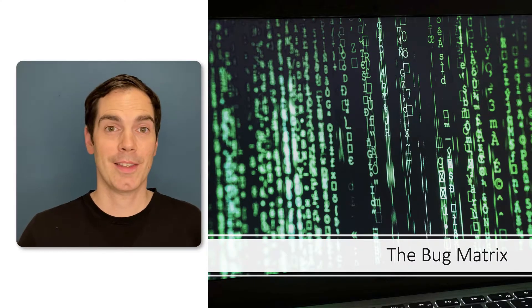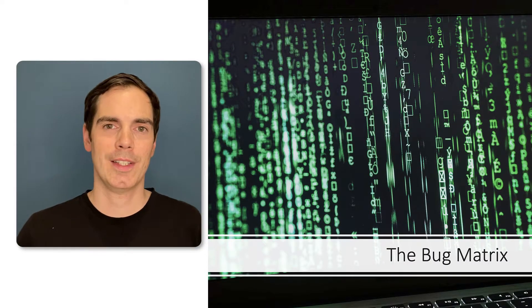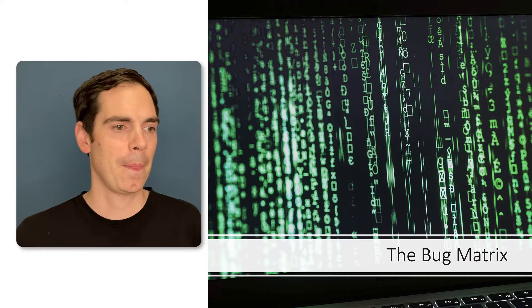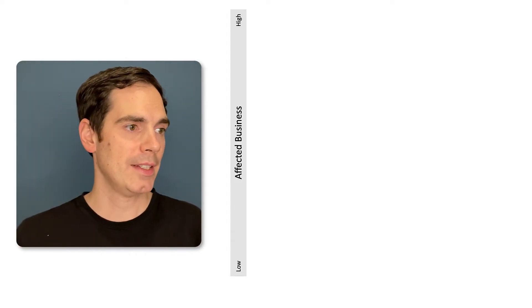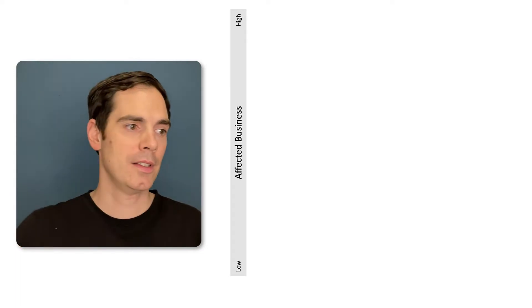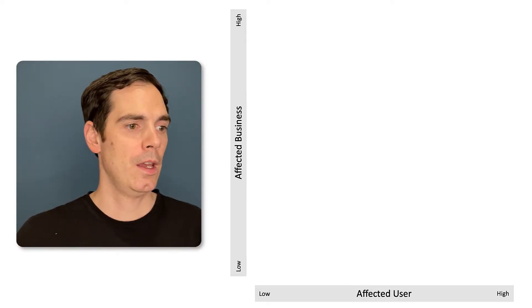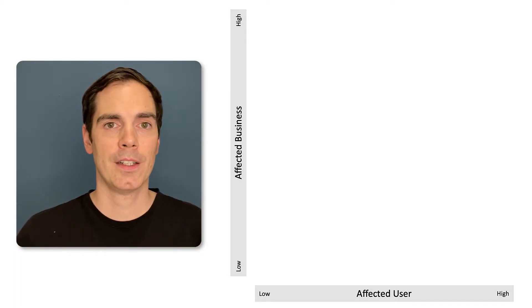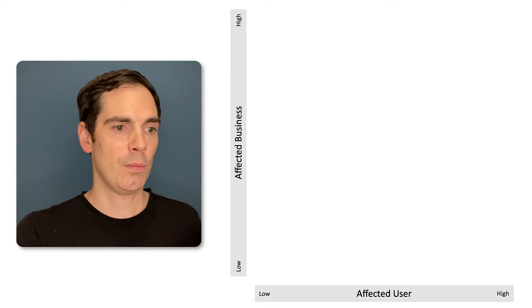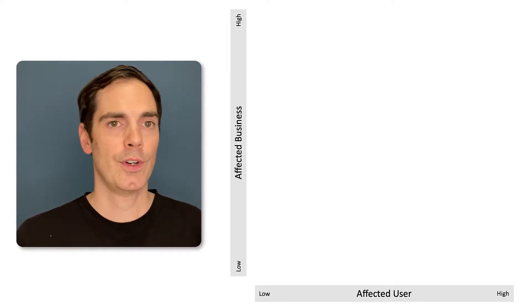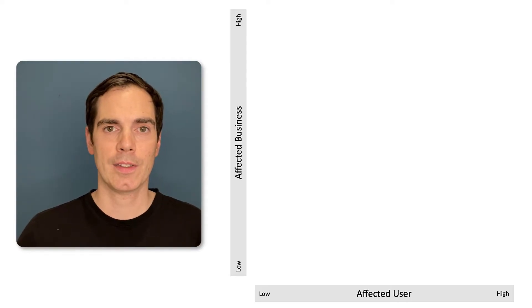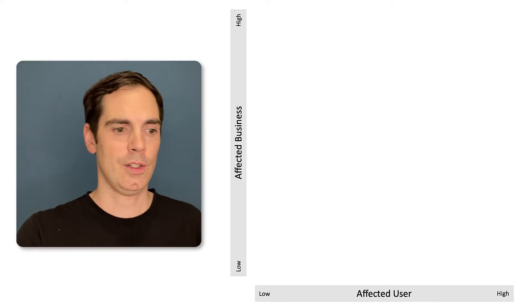Let's take a look at the bug matrix — this is what I've brought with you today. So what is the bug matrix all about? Basically, we have two axes: the y-axis where we have the affected business from low to high, and on the x-axis we have the affected users, also from low to high priority. And in between we have different fields and areas where we can place a bug.